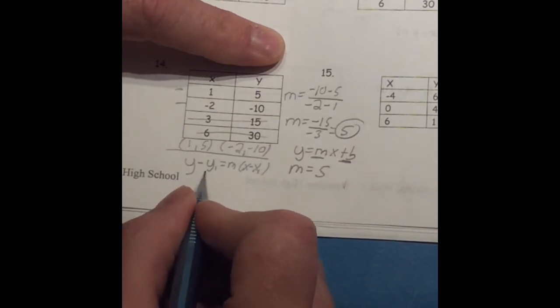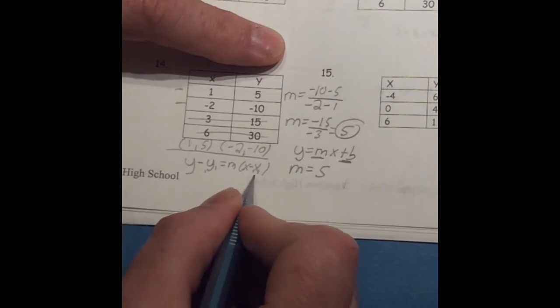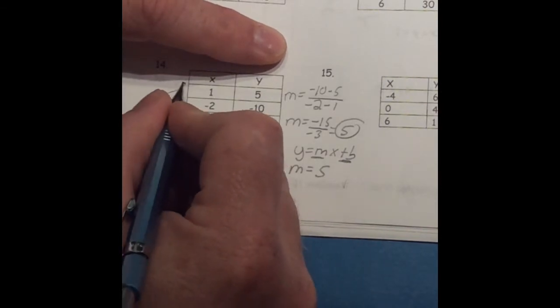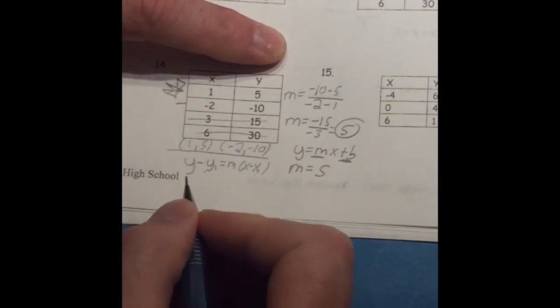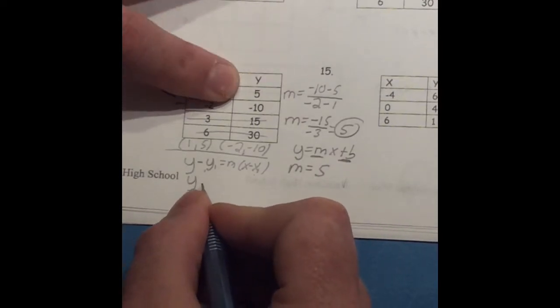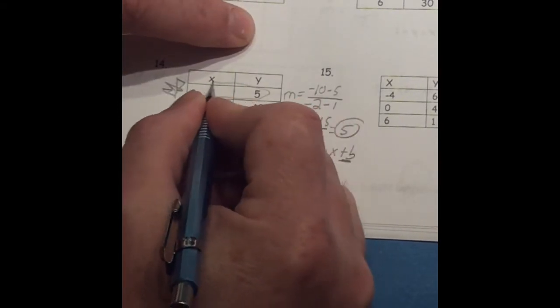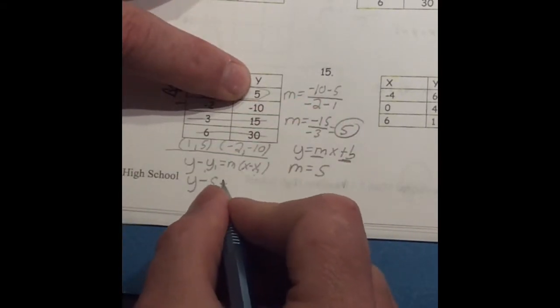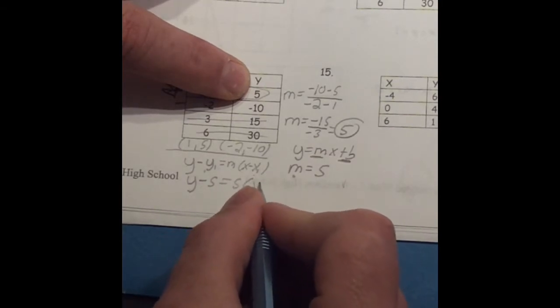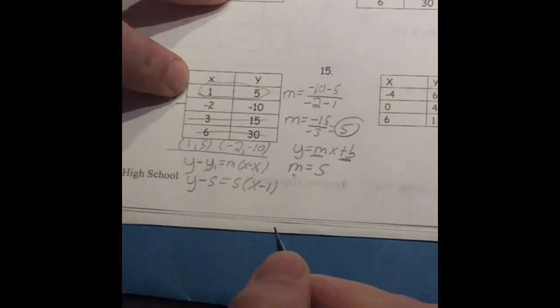This says, take Y, subtract any known Y. Equals your slope and then X and any known X. So, let's go ahead and put a star by the point I'm going to use. Which isn't much of a star, but here we go. So, I'm going to say Y minus 5. That's the, from this point right here, 1, 5. We're going to use the y-value. Equals our slope, which we've already set as 5. And then we have X minus 1. That's the known X we have.